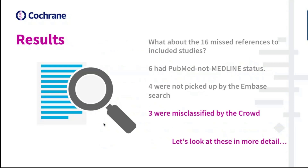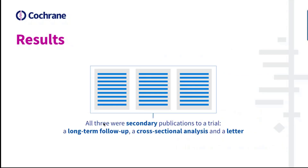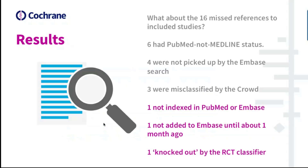A further three studies were misclassified by Cochrane Crowd, and all three were secondary publications to a trial. Of the remaining three missed references, one was a journal article not published in a journal indexed by Embase or PubMed, one wasn't added to Embase until week 34 of this year despite having been published in 2018 (it was a conference publication), and the last was the only record to have been mistakenly knocked out by the RCT classifier.